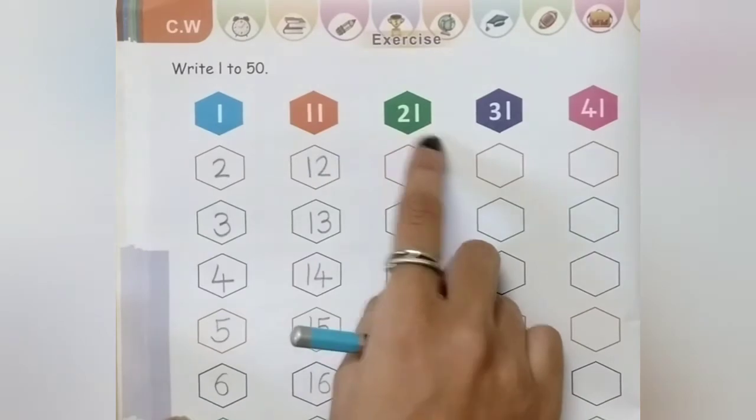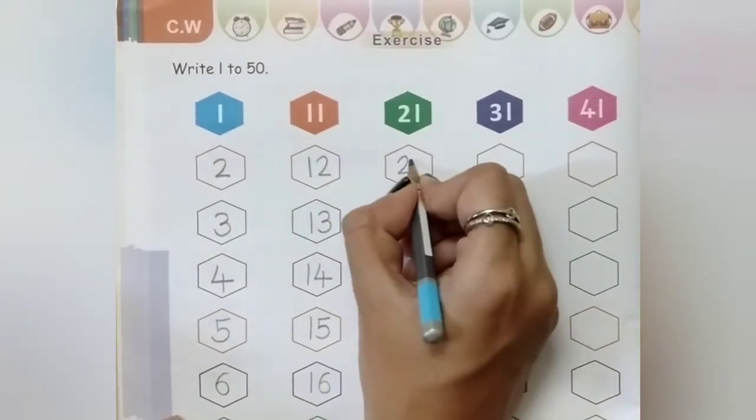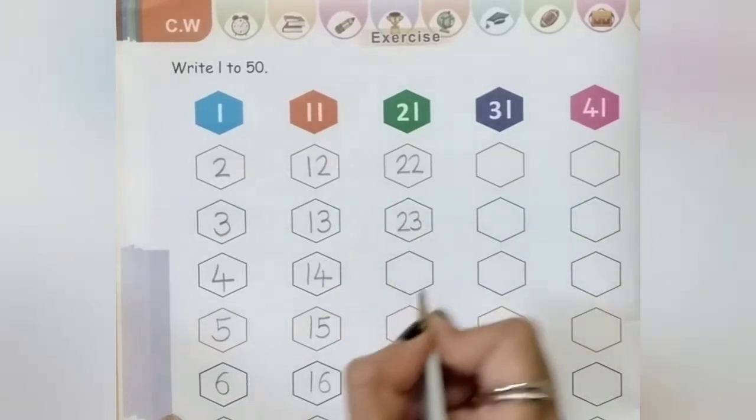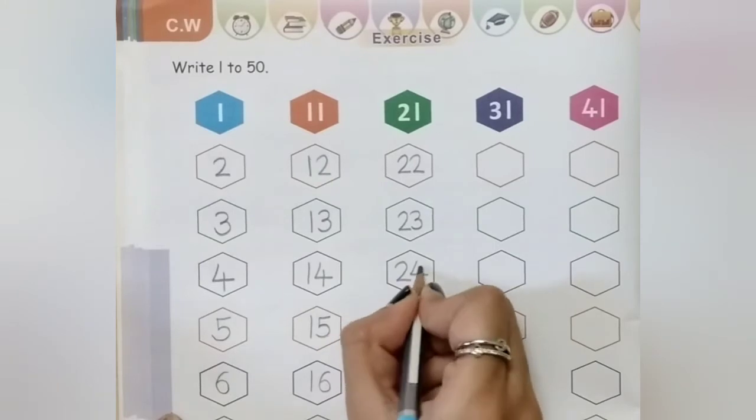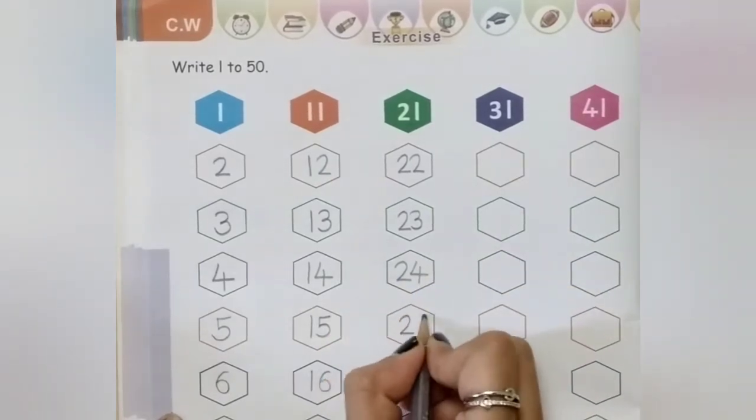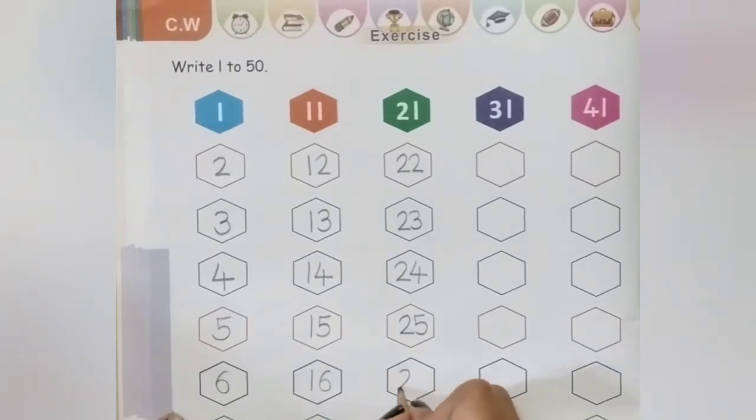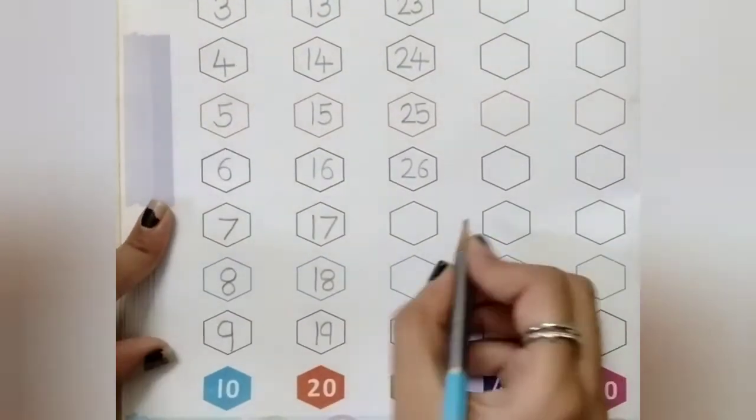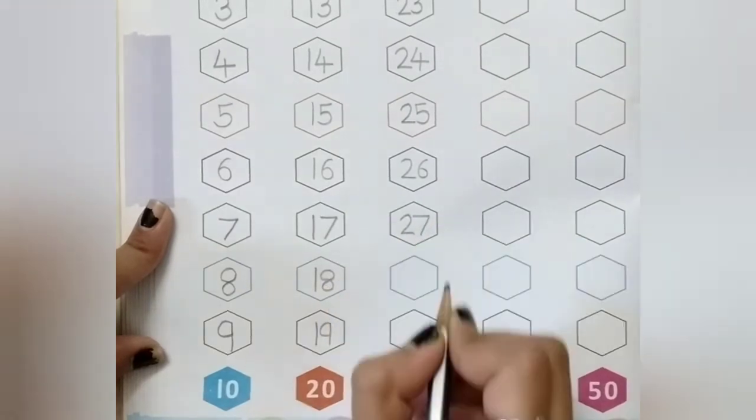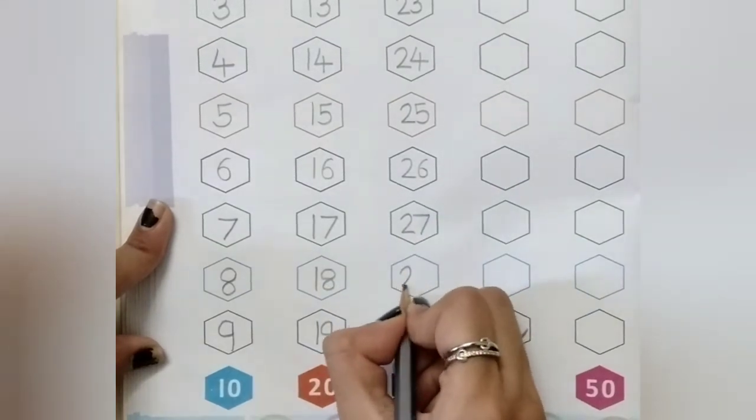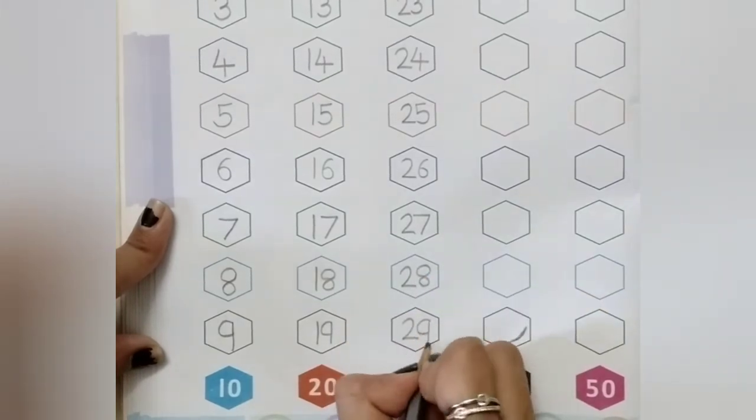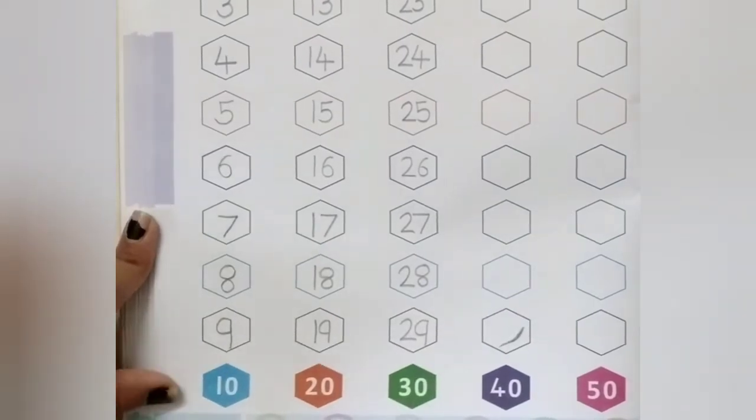21, 22, 23, 24, 25, 26, 27, 28, 29, 30. 30, okay.